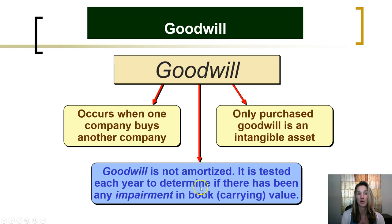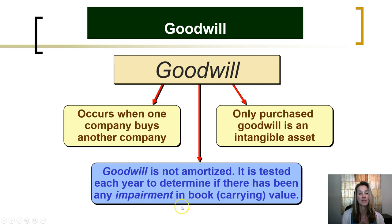Goodwill is one of the last primary intangible assets that companies report as an asset. Goodwill occurs when one company buys another company — only purchased goodwill is an intangible asset. Goodwill is not amortized; it is tested each year to determine if there has been an impairment in the book or carrying value. Goodwill is a little beyond the scope of introductory accounting courses and is discussed in further detail in intermediate and advanced accounting courses.